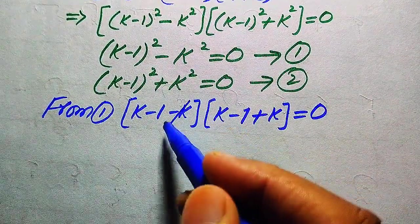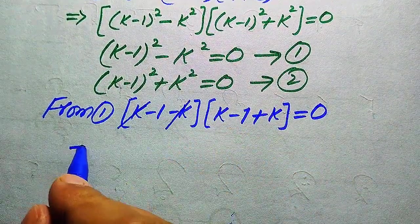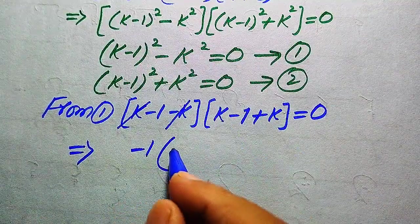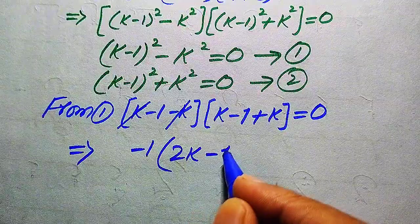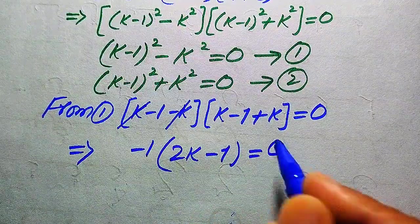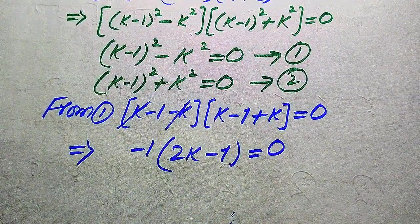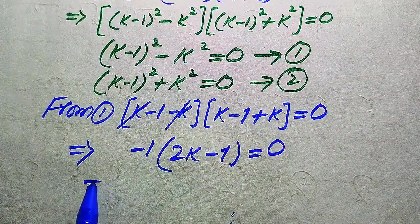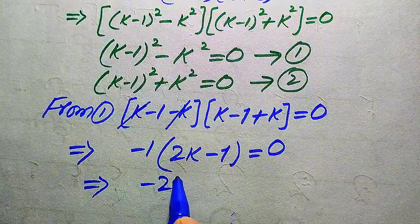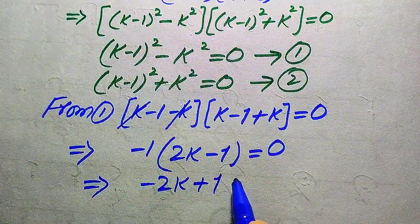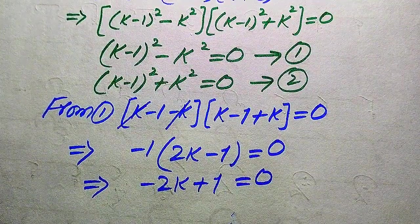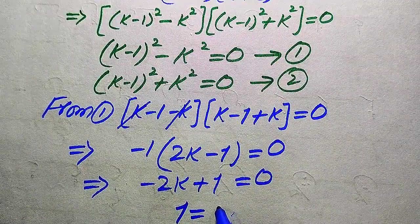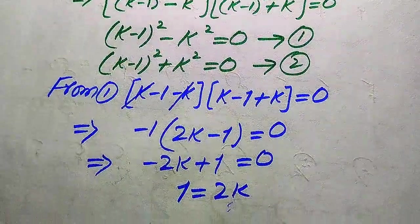Here, negative k and positive k cancel each other, giving us minus 1 times (2k minus 1) equals 0. Expanding, we get minus 2k plus 1 equals 0. Moving minus 2k to the right hand side gives 1 equals 2k.